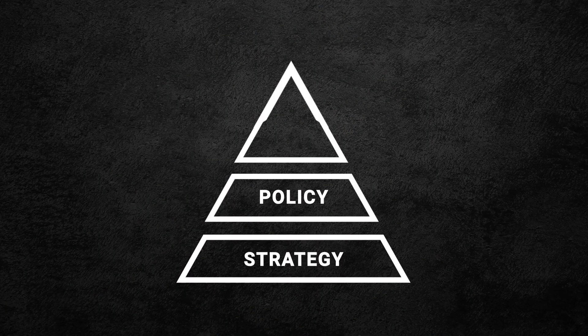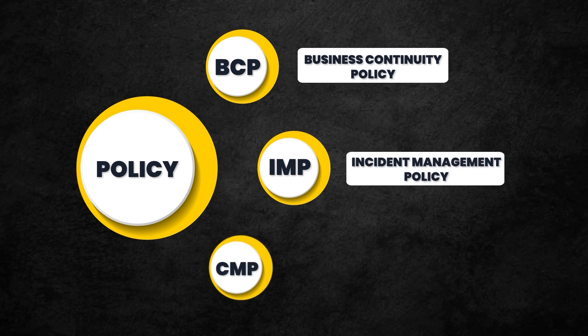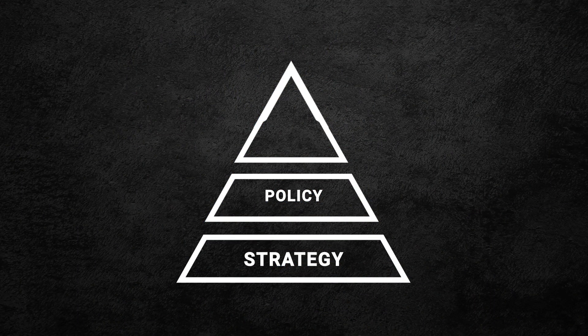To implement the strategy in the organization, we create a program. When implementing a program, the first thing we need is policy, because policy builds the foundation. For example, if you want to implement BCP, you need a BCP policy. If you want an incident management system, you need an incident management policy. Any kind of program you introduce requires policy first. So: first step is strategy, then policy, policy is included in the program, and the program is tactical in nature.